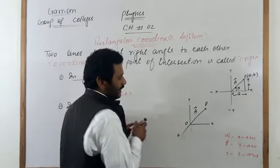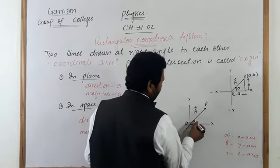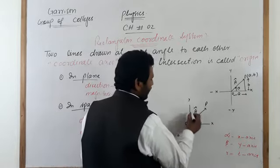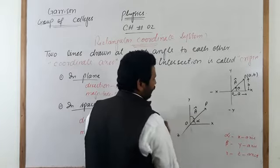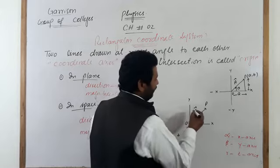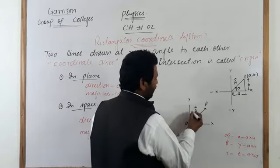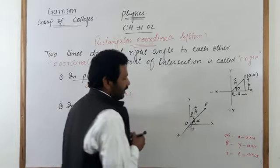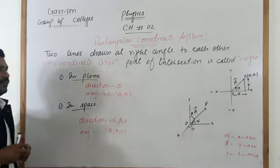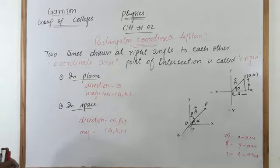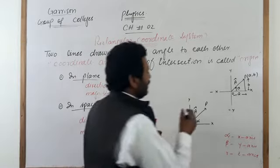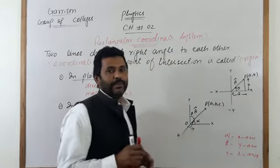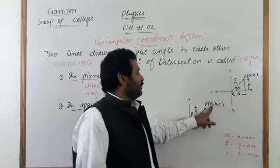We join the representative line of vector A with angle alpha along the positive x-axis in the anticlockwise direction, with angle beta along the y-axis, and similarly the direction along the z-axis is represented by angle gamma. In space, this point P of vector A has coordinates (a, b, c).